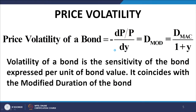Then we come to another similar term: price volatility. The price volatility of a bond is the percentage change in price corresponding to a unit change in YTM, with a negative sign. This corresponds to the modified duration of the bond — it is synonymous with the modified duration. Volatility can also be defined as the sensitivity of the bond expressed per unit of bond value, since we are dividing dP by P.